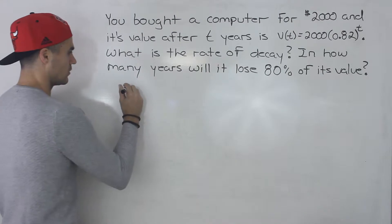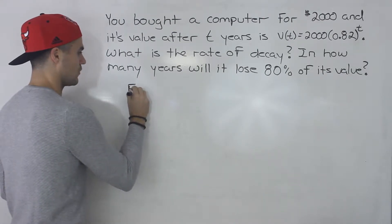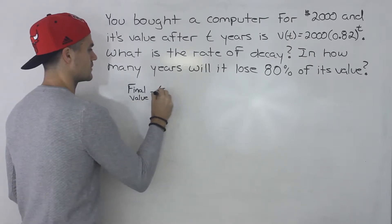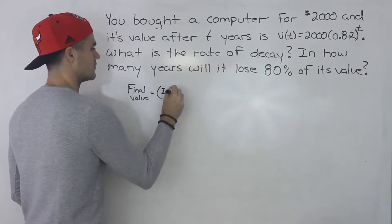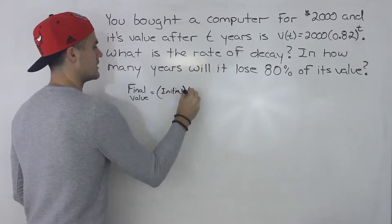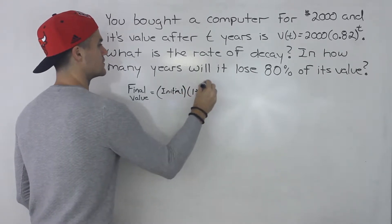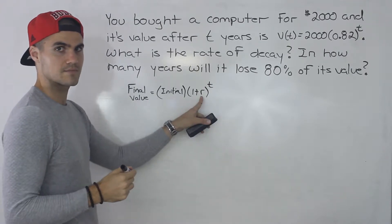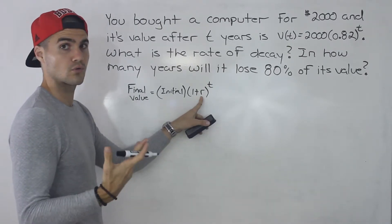Well in general as we've said before we know the final value of something is equal to the initial value times 1 plus r to the power of t. And then this r here in brackets is the rate of growth or the rate of decay.